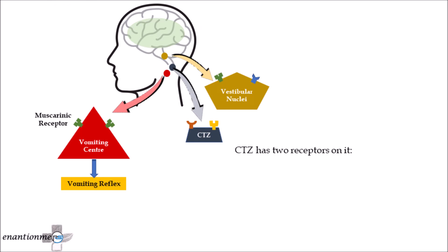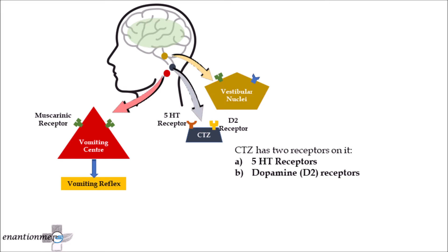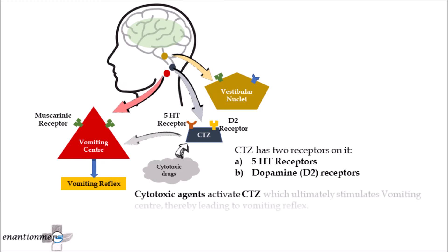CTZ has two receptors on it: first, 5-HT3 receptors; and second, dopamine D2 receptors. Cytotoxic agents activate the chemoreceptor trigger zone, which ultimately stimulates the vomiting center, thereby leading to the vomiting reflex.